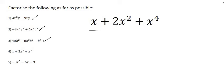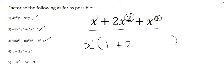Here we have three terms. They all have an x. The first term has one x, the second has two, and the third has four. We always take out the lowest amount, so we take out x to the power of 1. In the first term, if nothing is left over, we write a 1. In the second term, the 2 remains and one x remains, since it had two and one was taken out. The third term originally had four x's — one was taken out — so three x's are left over.